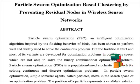Particle swarm optimization is a population-based stochastic approach for solving continuous and discrete optimization problems. In particle swarm optimization, simple software agents called particles move in the search space of an optimization problem. The position of a particle represents a candidate solution to the optimization problem at hand.